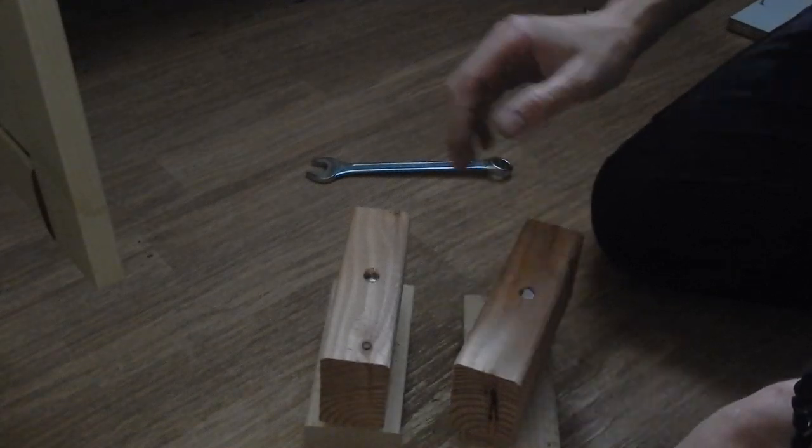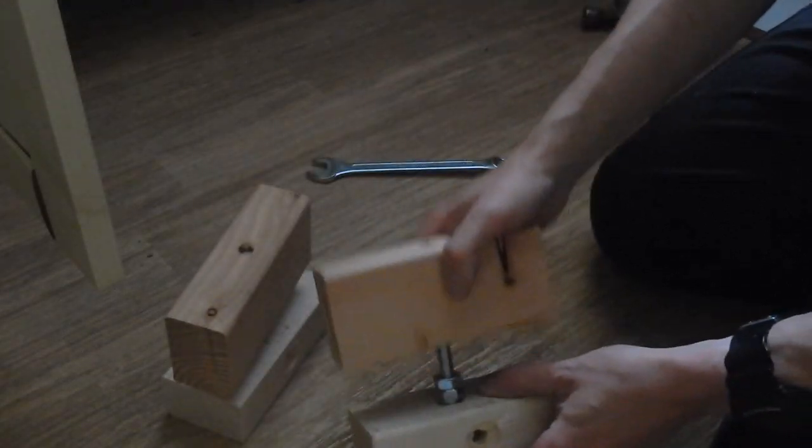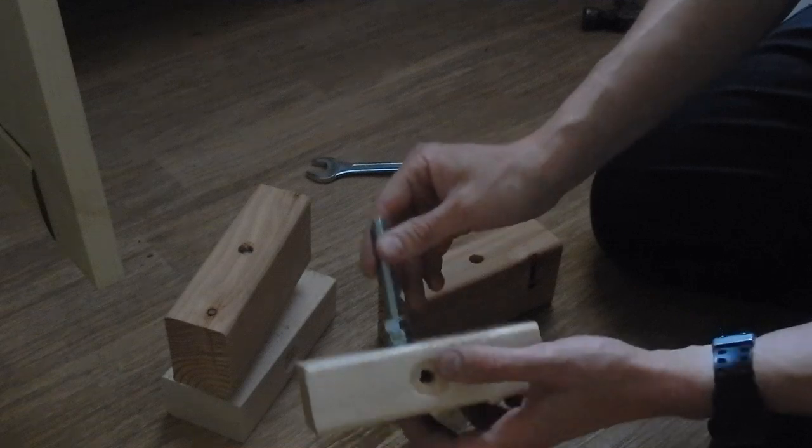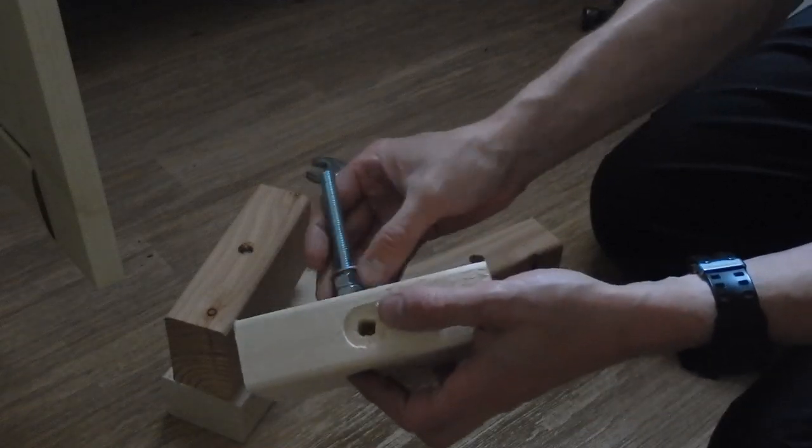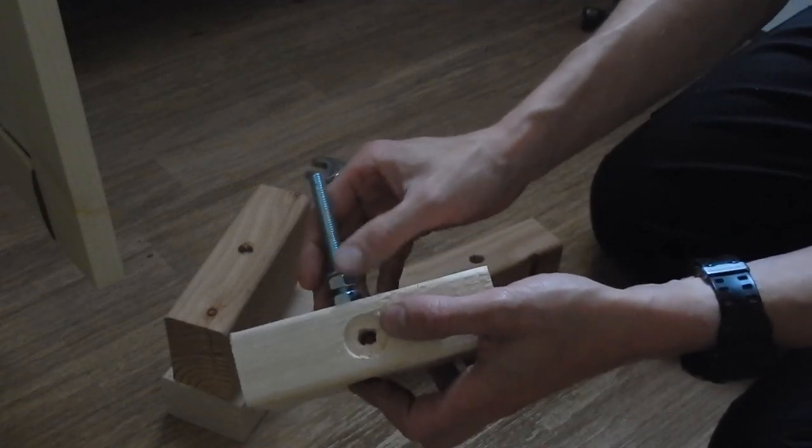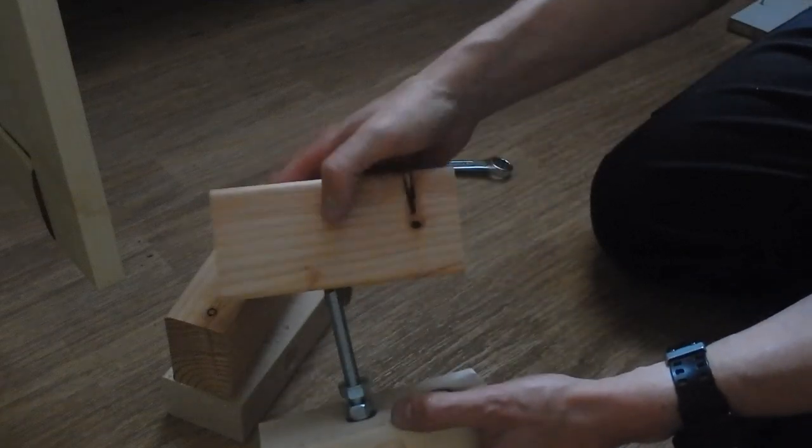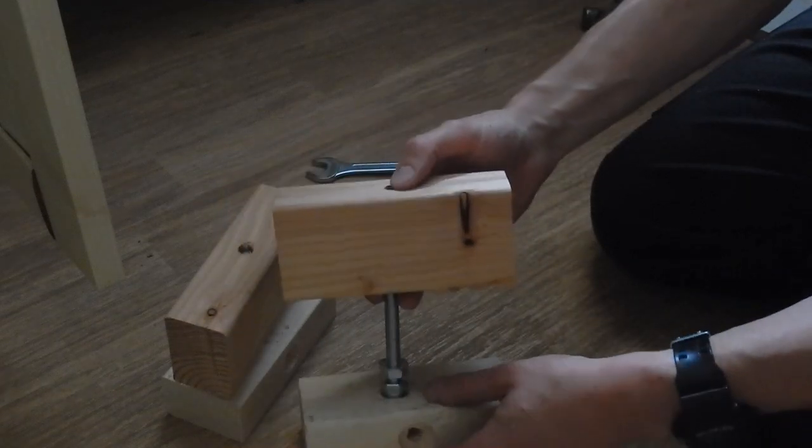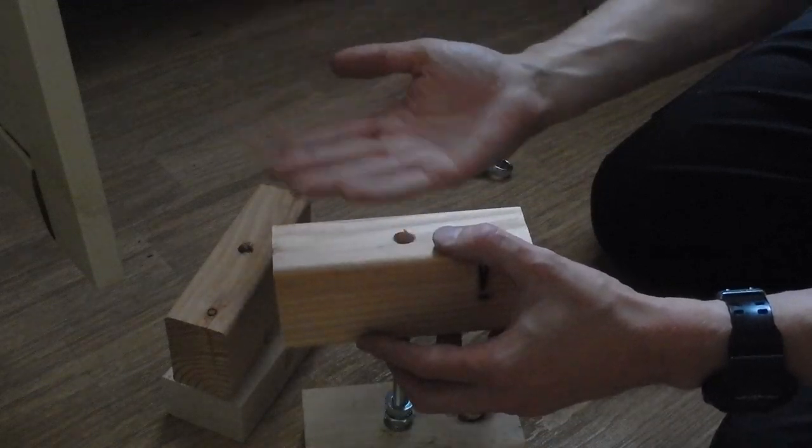So my big idea is to take some blocks of wood like this, with a coach bolt fixed through, and then by loosening this nut here, I should be able to raise this block, effectively restoring the height of the fallen shelf.